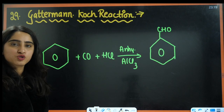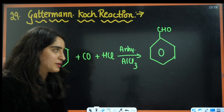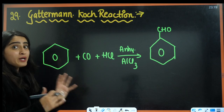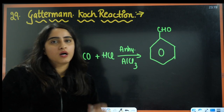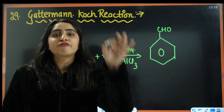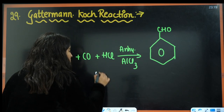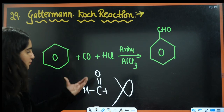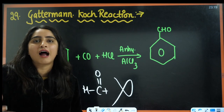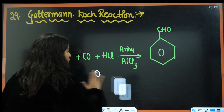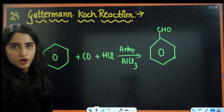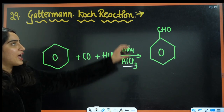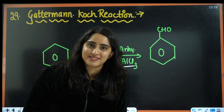Next is Gattermann-Koch reaction, which is different from Gattermann reaction. Here we have benzene — we cannot use Friedel-Crafts acylation because the formyl carbocation (CHO⁺) is unstable. So instead, CO, HCl, and anhydrous AlCl₃ are used, and we get the CHO group on benzene (benzaldehyde).